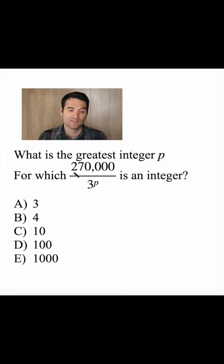Well, let's get to it. If I divide 270,000 by 3, I get 90,000, right? So that's one 3.